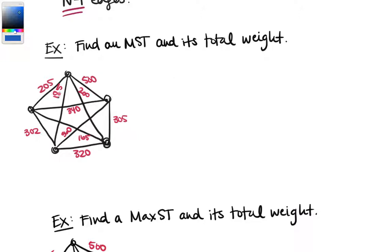We have weights like 205 and 185. We want to go through and pick the lowest one, which is 165 — that's this edge here. So we're going to mark that one and keep track of our total weight. Let's label our vertices to make things easier.